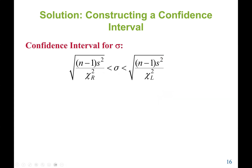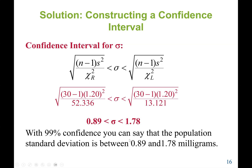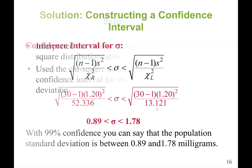For the confidence interval for the standard deviation, we take the square root of the variance endpoints. Taking the square root of 0.80 and 3.18, the population standard deviation is greater than 0.89 but less than 1.78.